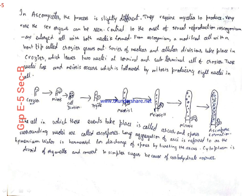This all occurs under the cell called ascus, and the spores that are formed here are known as ascospores. There are eight spores in all in one ascus, each spore containing the nucleus. A large aggregation of asci is known as hymenium. Water is important for discharge of spores by bursting the ascus. The hymenium here acts as a fruiting body.